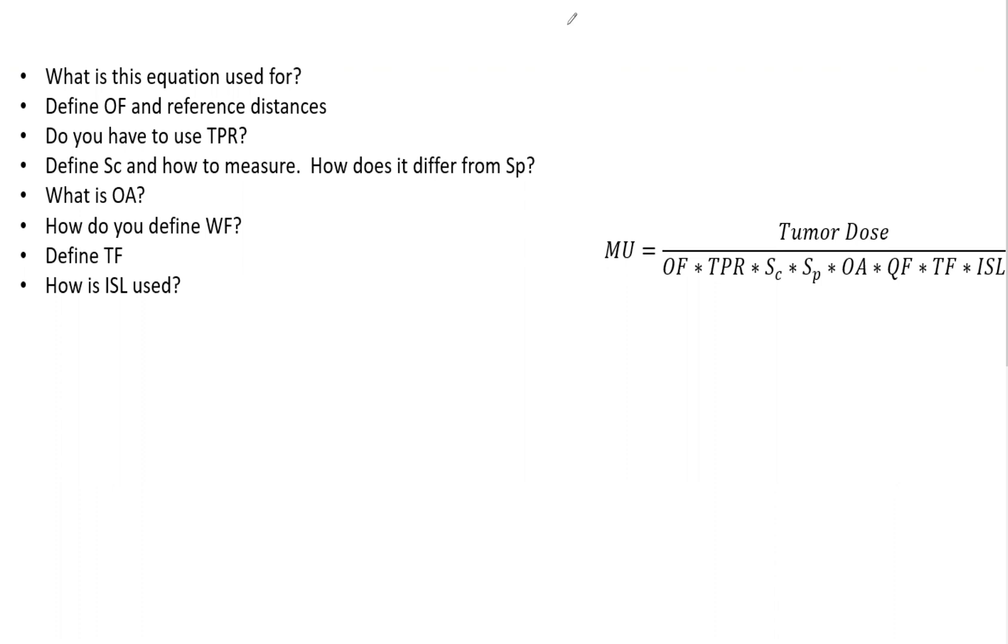This equation is used to determine the number of MUs for a treatment field for photons. Remember, photons and electrons have different equations. Photons are more involved, especially in the bottom of the equation, so they should be pretty easy to differentiate.